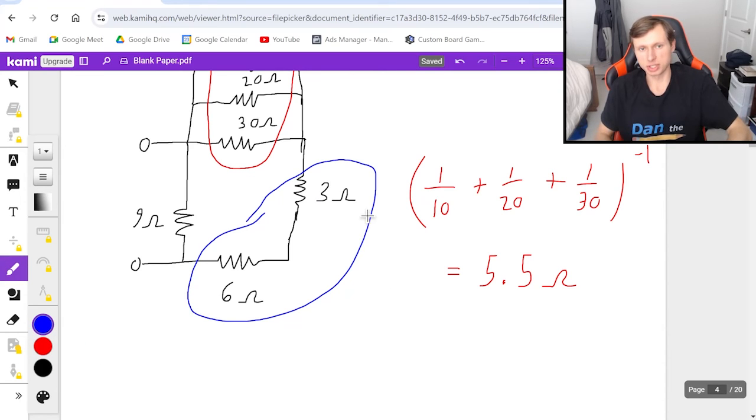Then for the two blue resistors, that's really easy. They're in series, so it's 6 plus 3 equals 9 ohms.